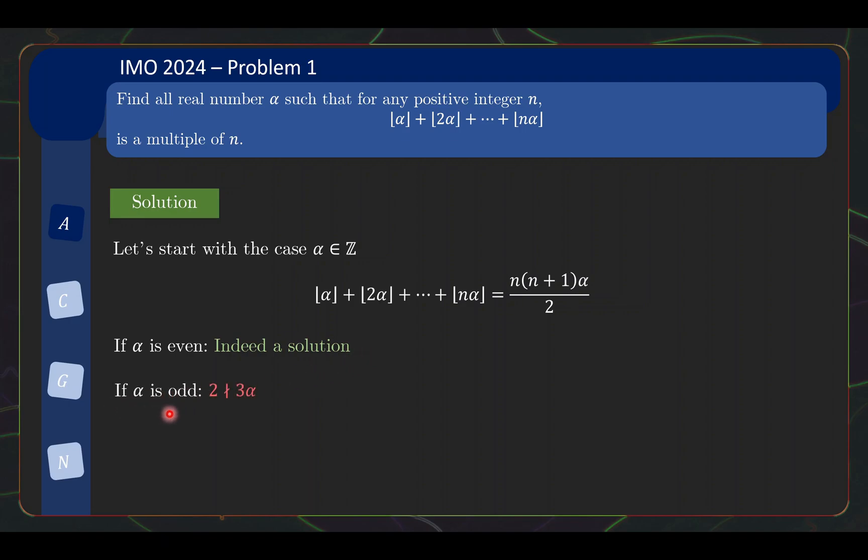On the other hand, if alpha is an odd integer, then right off the bat, alpha plus 2 alpha is 3 alpha and 2 does not divide 3 alpha when alpha is odd. So in this case, we do not have any valid solutions.